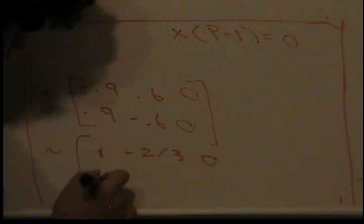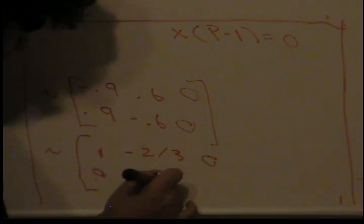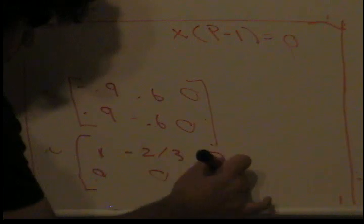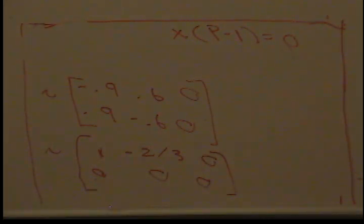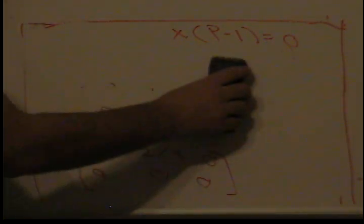You get 1, negative 2/3, 0. You simply just get zeros on the bottom.